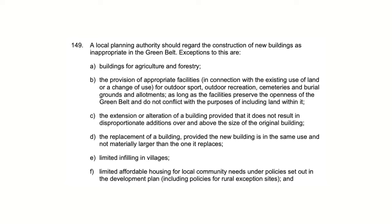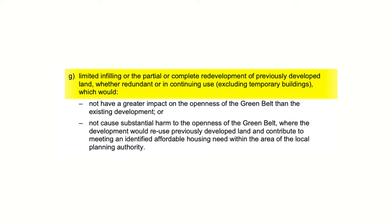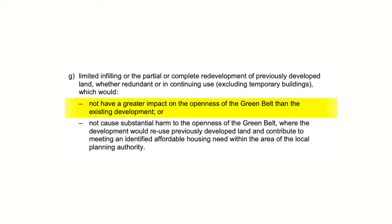The important exceptions for developers in the Greenbelt are sub E — limited infilling in villages; F — limited affordable housing for local community needs; and G — limited infilling or the partial or complete redevelopment of previously developed land, whether redundant or in continuing use, excluding temporary buildings, which would not have a greater impact on the openness of the Greenbelt than the existing development, or not cause substantial harm to the openness of the Greenbelt, where the development would reuse previously developed land and contribute to meeting an identified affordable housing need within the area of the local planning authority.